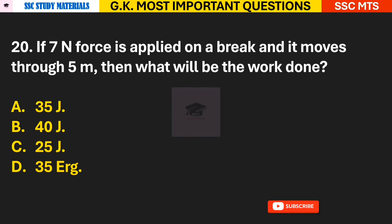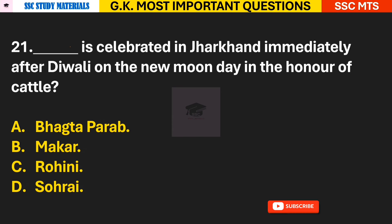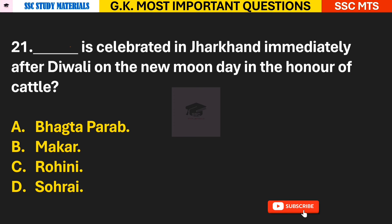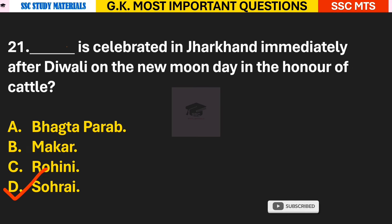Question 20: If a 7N force is applied on a block and it moves through 5 meters, what will be the work done? Answer A — 35 joules. Question 21: Which festival is celebrated in Jharkhand immediately after Diwali on the new moon day in honor of cattle? Answer D — Sohrai is celebrated in Jharkhand immediately after Diwali.